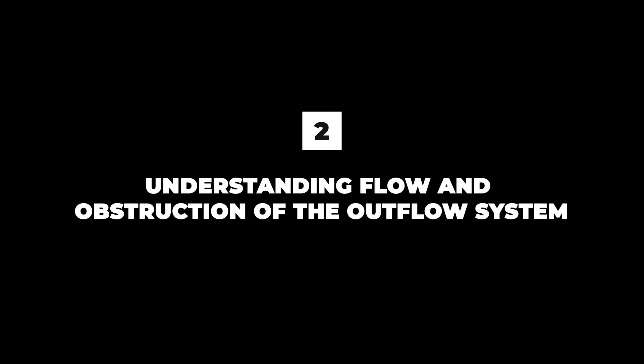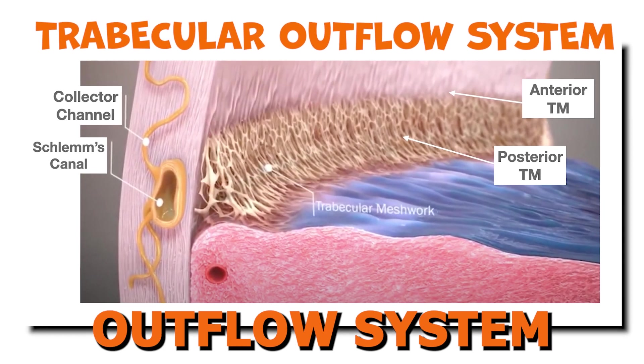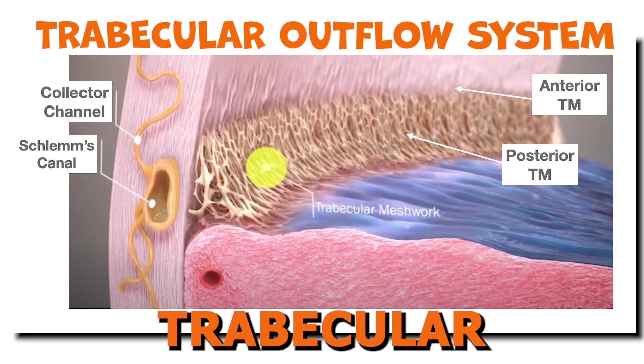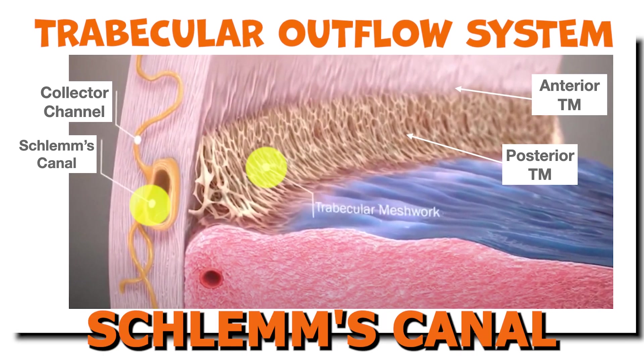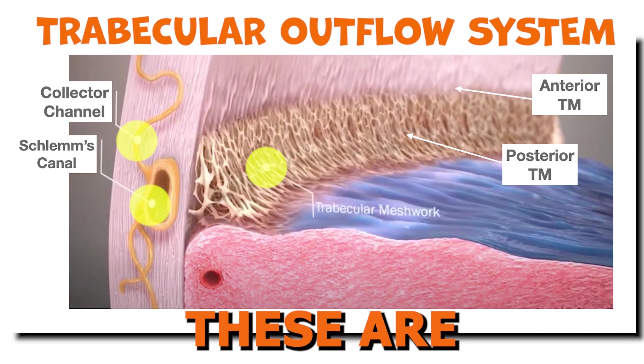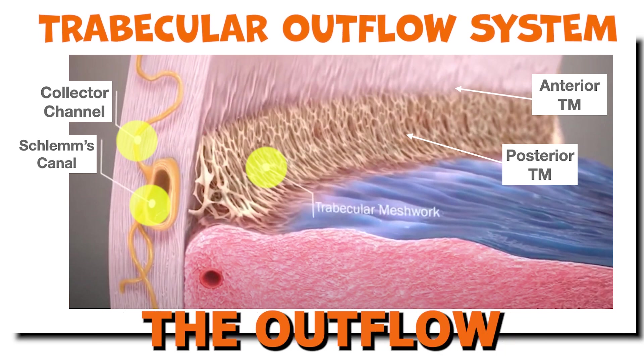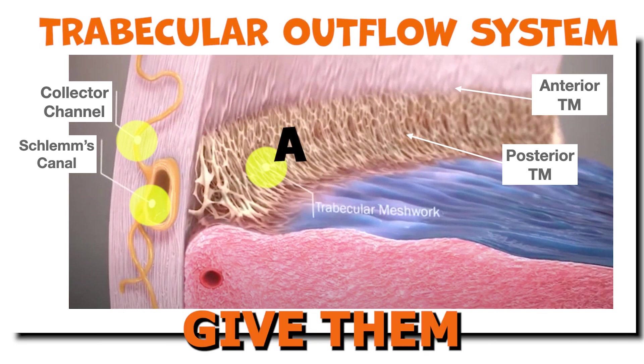Lesson 2: Understanding the flow and obstruction of the outflow system. The trabecular outflow system consists of the trabecular meshwork, Schlemm's canal, and the collector channels. These are the main areas where obstruction or damage affects the outflow system. Let's give them each a letter and describe them as we point out each location.